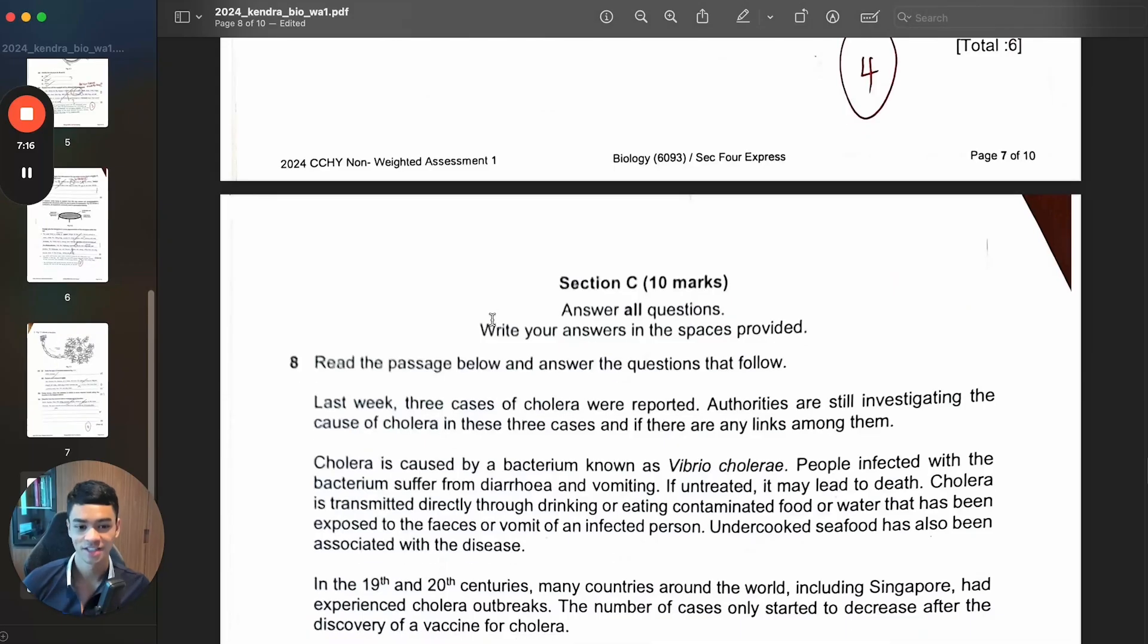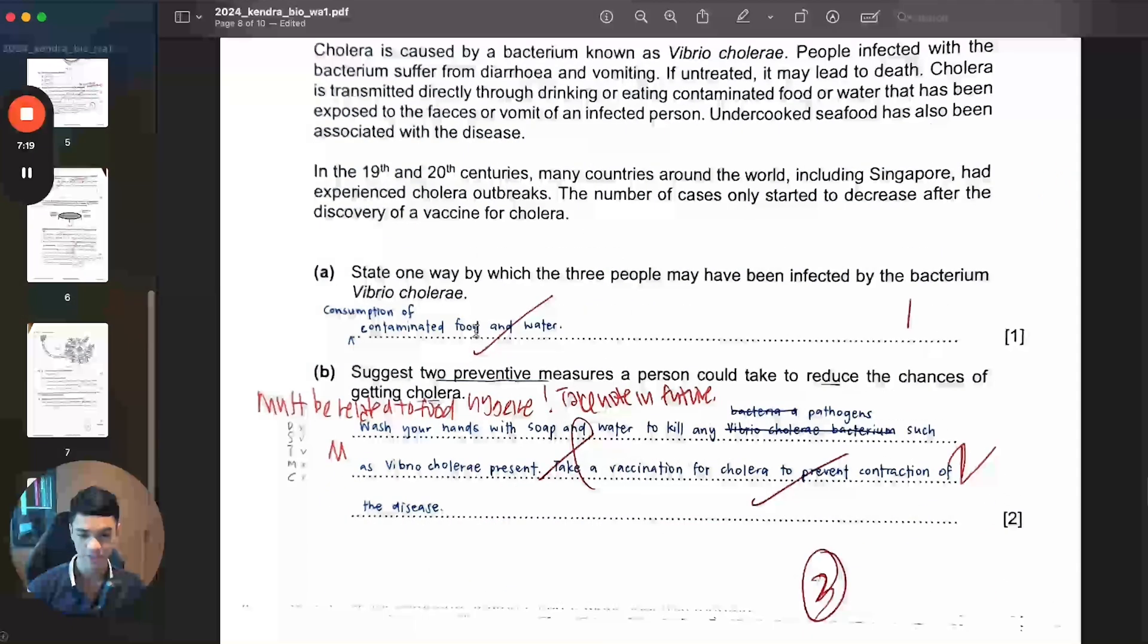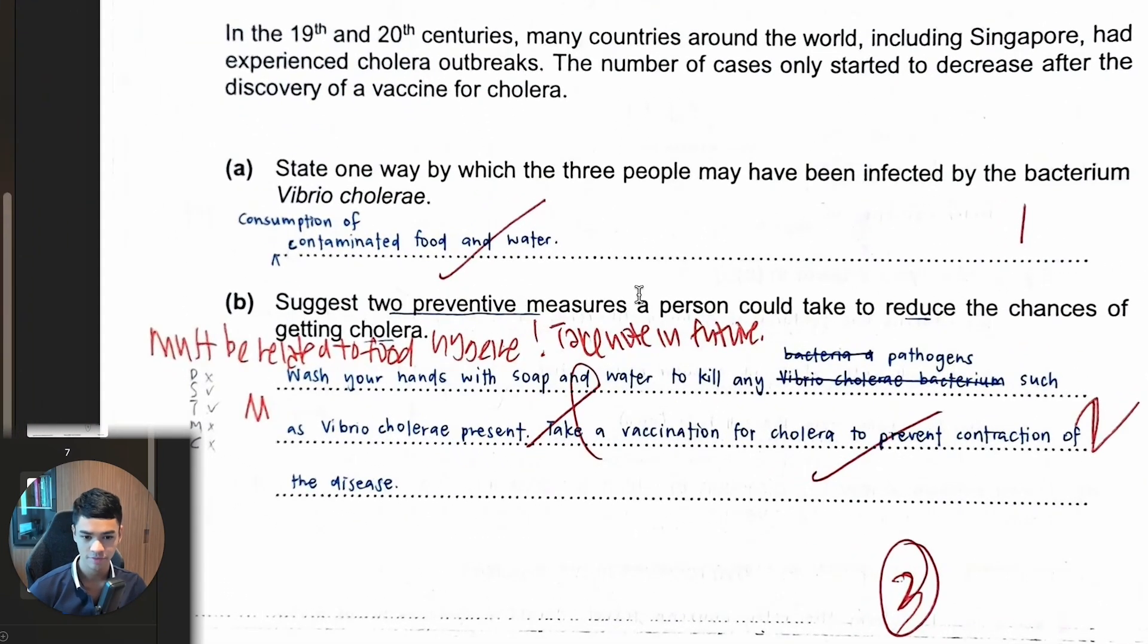Then this question, cholera, how is it spread? Two preventive measures a person can take to reduce chance of getting cholera. How do you get it is when you eat contaminated food and water. You say here wash your hands with soap and water to kill. This is an application question and it requires you to put yourself in the real life scenario. Imagine, let's say the burger has cholera bacteria on it. The burger is contaminated. I wash my hand, my hand is perfectly clean. I take the burger, it doesn't help. The burger still has the cholera. Do you see why you cannot put an answer? It doesn't help, it's irrelevant.